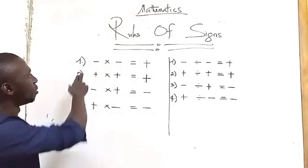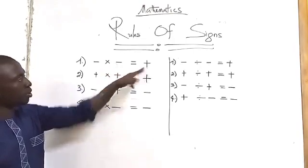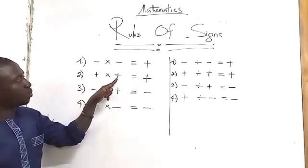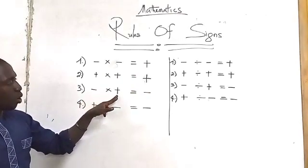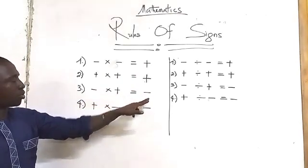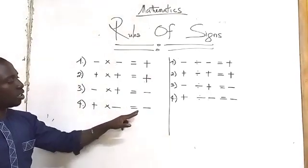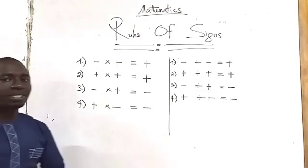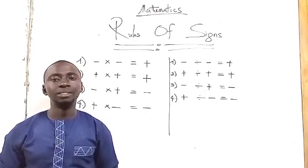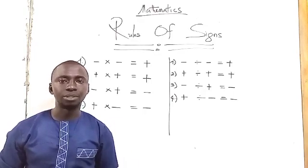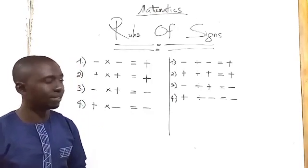In terms of multiplication: number one, minus times minus equals plus. Number two, plus times plus equals plus. Number three, minus times plus equals minus. Number four, plus times minus equals minus. This tells us the results we get when plus and minus are being multiplied together. Now let's go to the next phase.